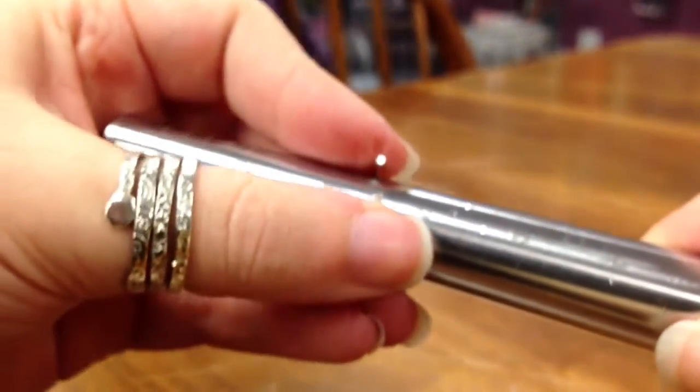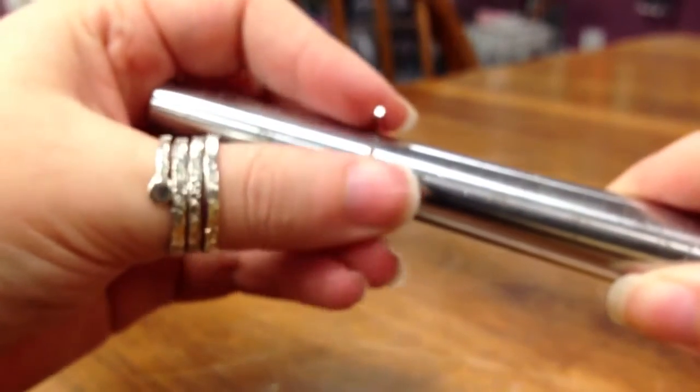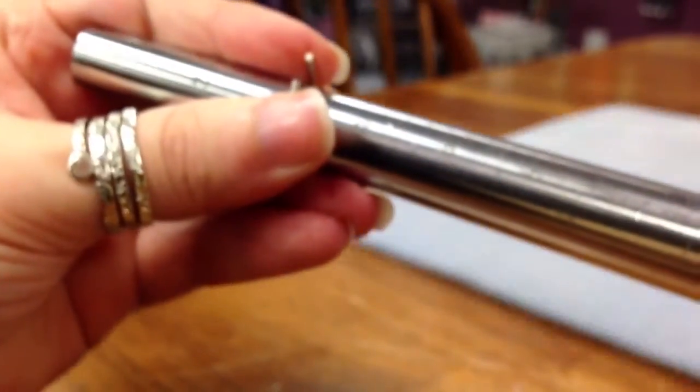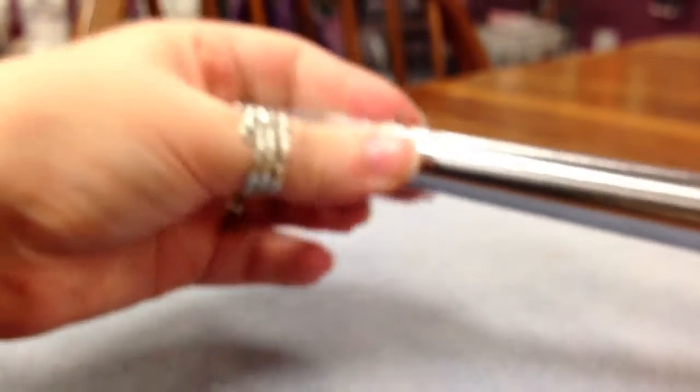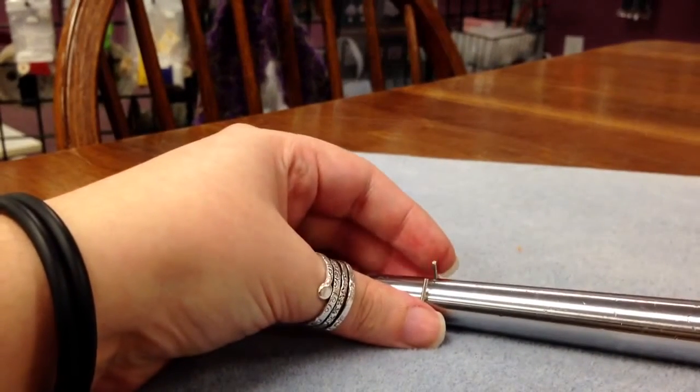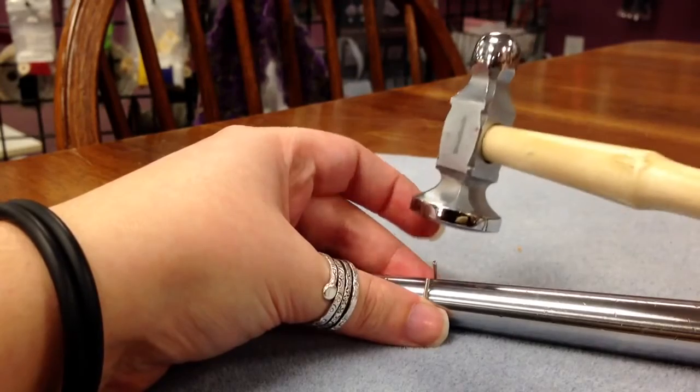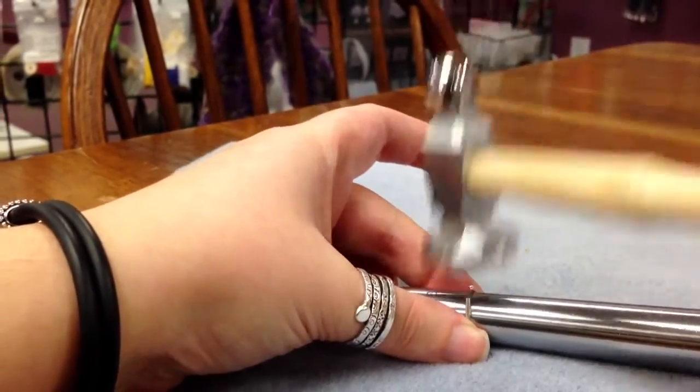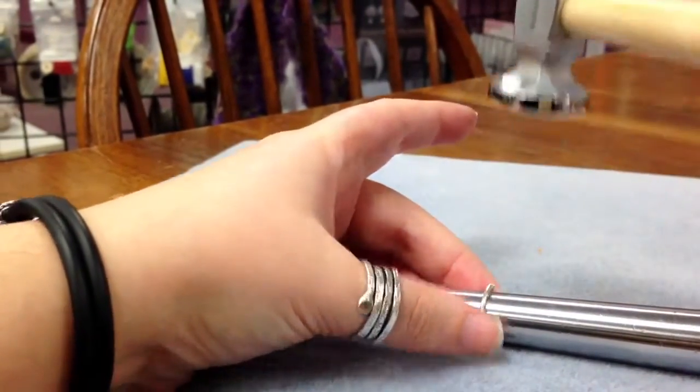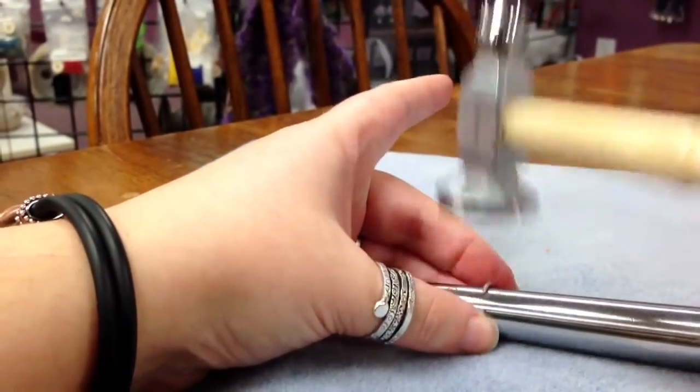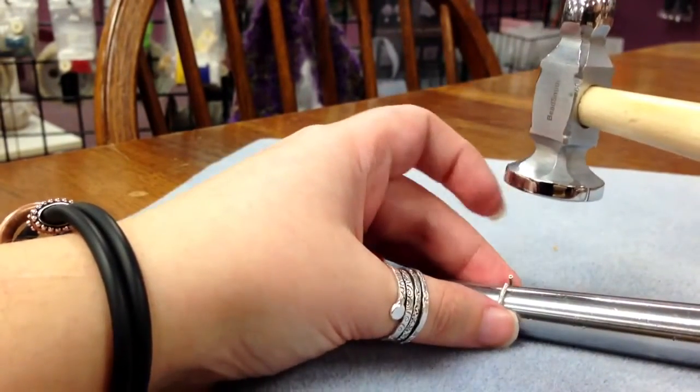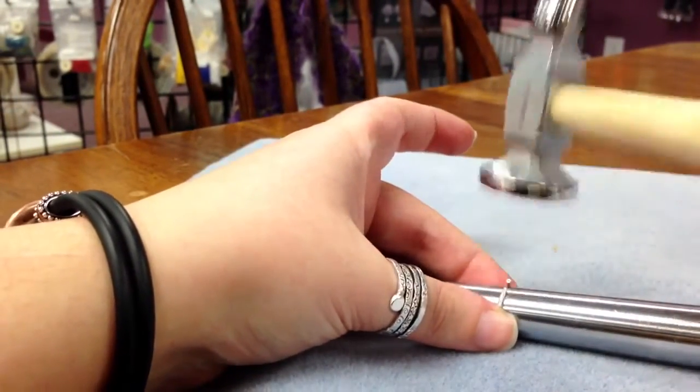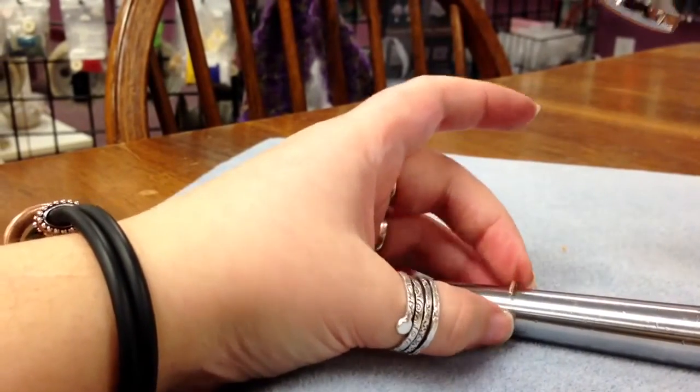And so we're going to have a tough time getting those ends down but that's okay because that's where the pad comes in. So we are going to place that down and see if I can focus. Awesome. And so what we're going to do is we're going to take this chasing side of the chasing hammer and we're going to hammer those ends down into a round shape. Okay so now once we have a fairly round shape, it's okay if it's not all the way down, we just kind of want it to be kind of as round as we can get it.